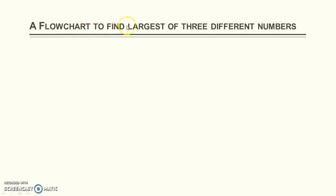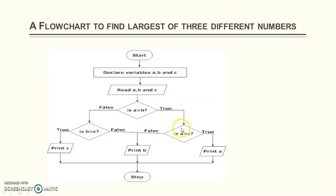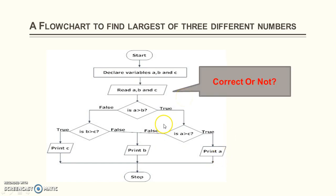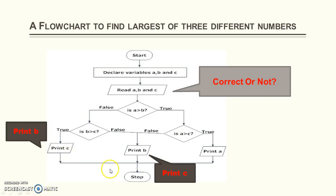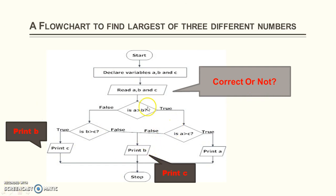Let's take another example — a flowchart to find the largest of three different numbers a, b, and c. Observe this flowchart to check whether it is correct or not. This flowchart is not correct — because here, instead of print c we have to print b, and instead of print b we have to print c. We read three numbers a, b, and c from the user. We check whether a is greater than b; if so, we check if a is also greater than c — then a is the largest. Else, c is the largest. If a is not greater than b, we check whether b is greater than c — if true, b is the largest; otherwise c is the largest.